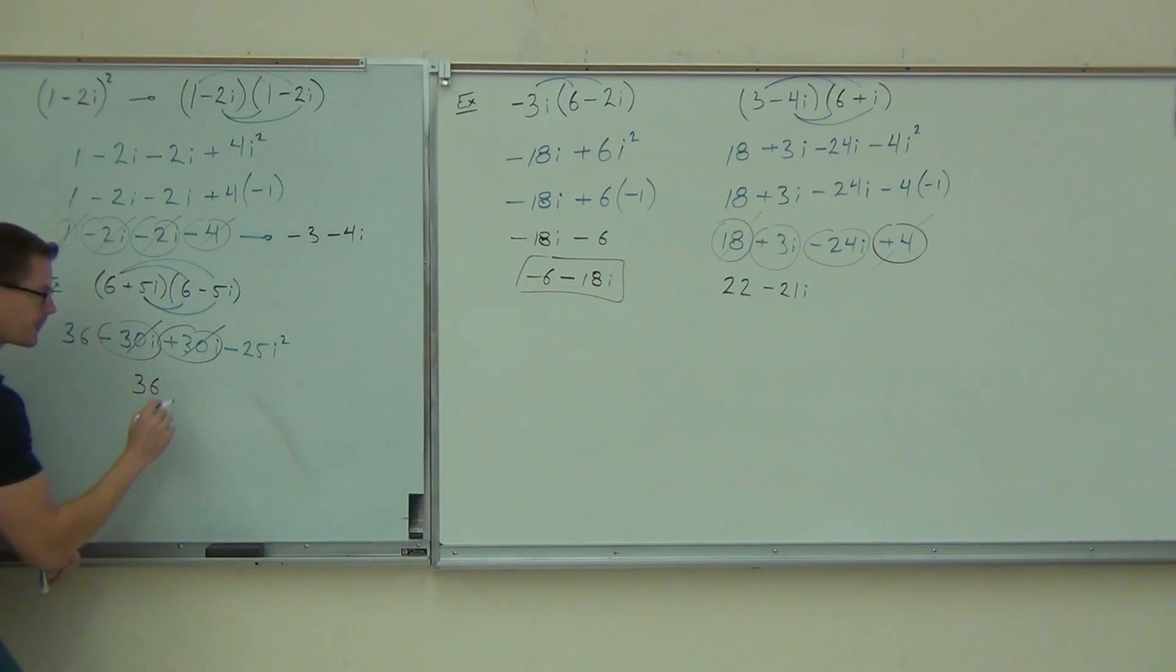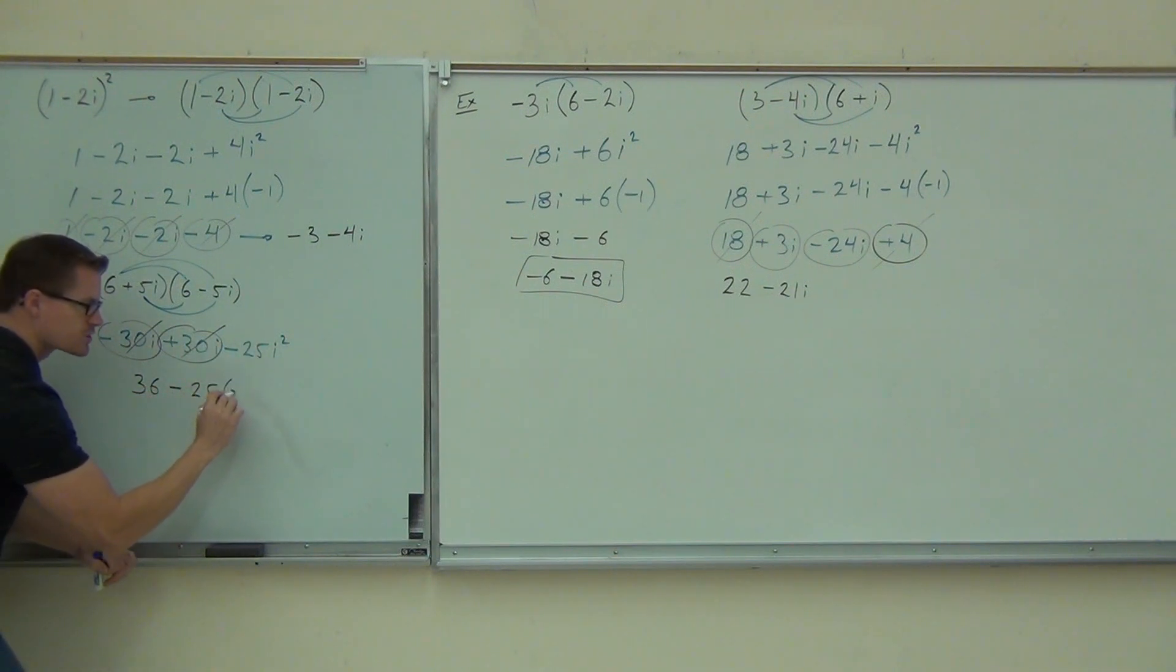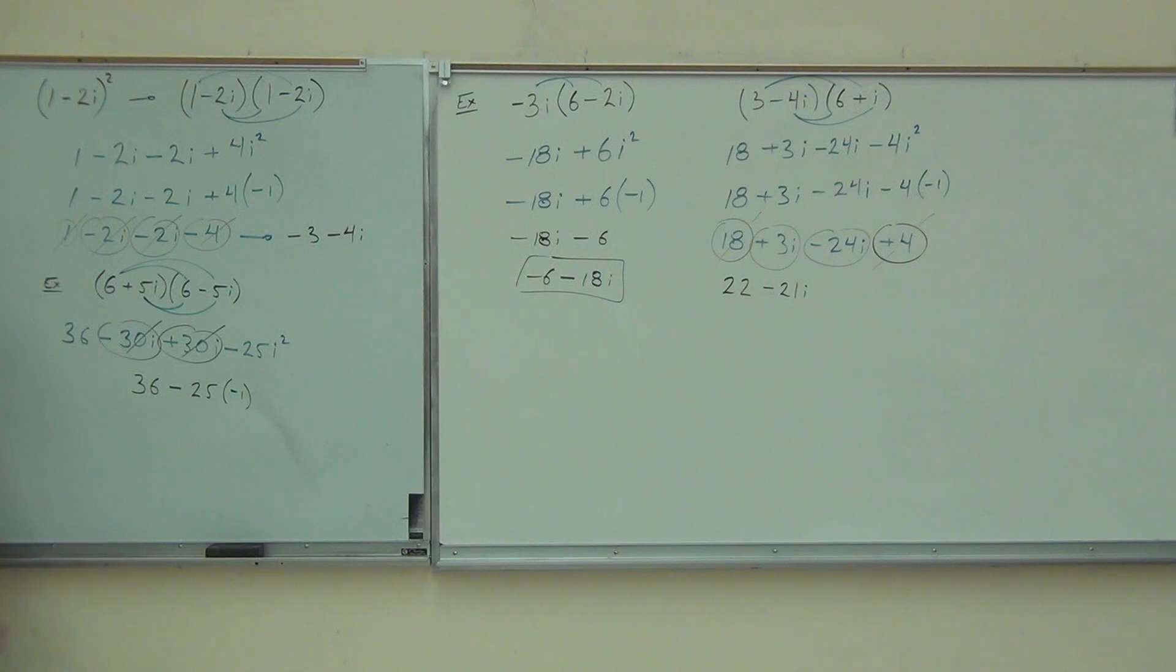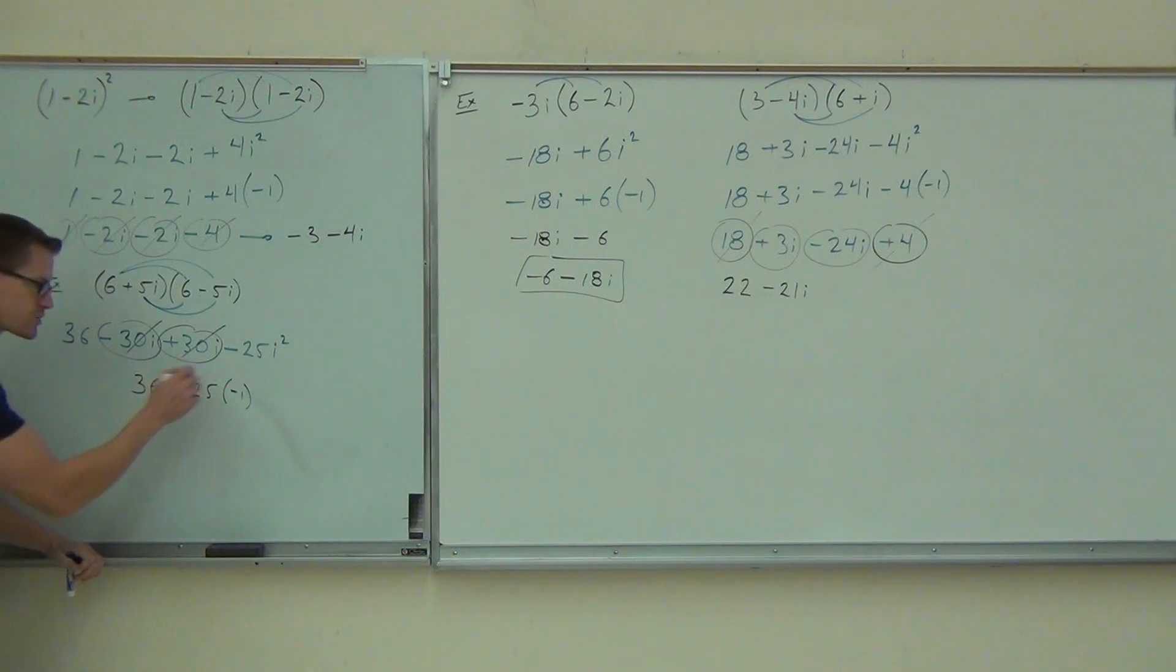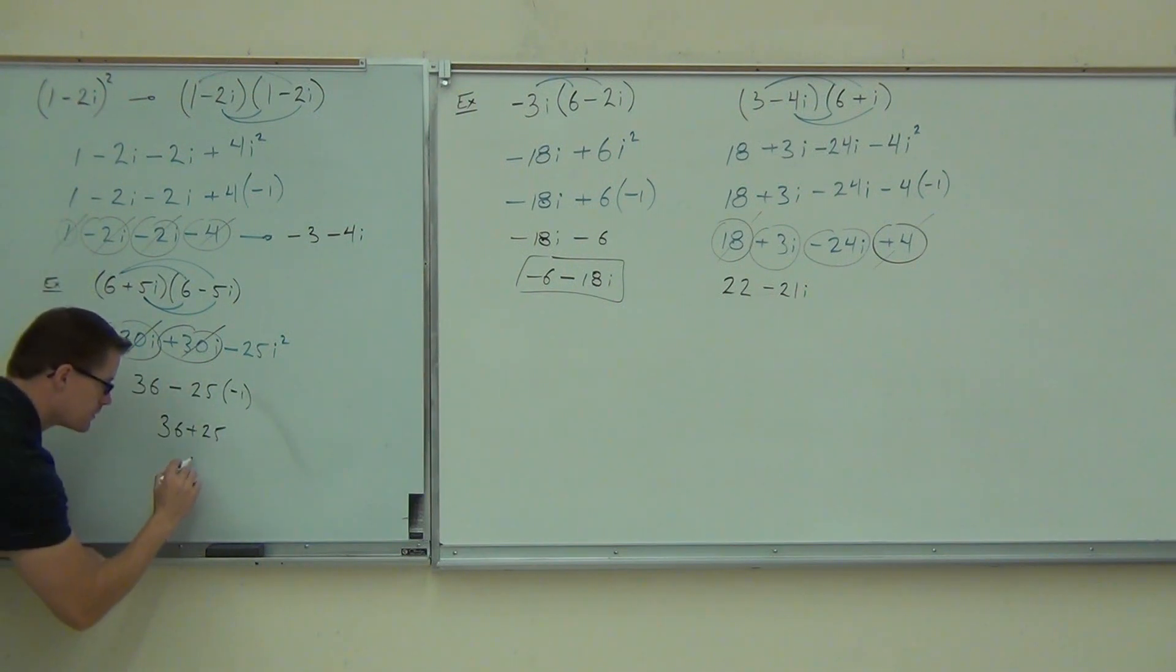That's what happened with those conjugates before, that's what's going to happen with these conjugates now. We do have 36 minus, from our minus 25i squared, I can write that minus 25i squared is negative 1. See where we're getting this minus from and the negative 1 from?